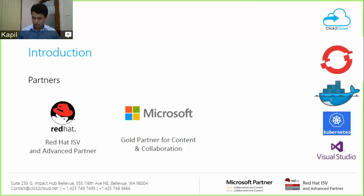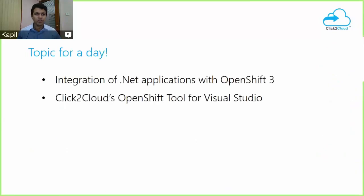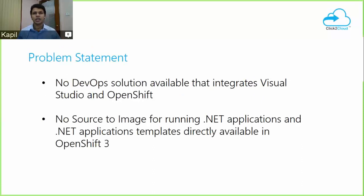Today we are going to talk about the integration of .NET applications with OpenShift 3, and we will see how we can use the Click to Cloud OpenShift Tool for Visual Studio. The Click to Cloud OpenShift Tool is our DevOps solution which allows developers to build, manage, and deploy their containerized .NET applications straight from the Visual Studio IDE to Red Hat OpenShift 3 cloud. Currently there is no DevOps solution available for Visual Studio developers to build, manage, and deploy their applications right from the IDE to OpenShift cloud.